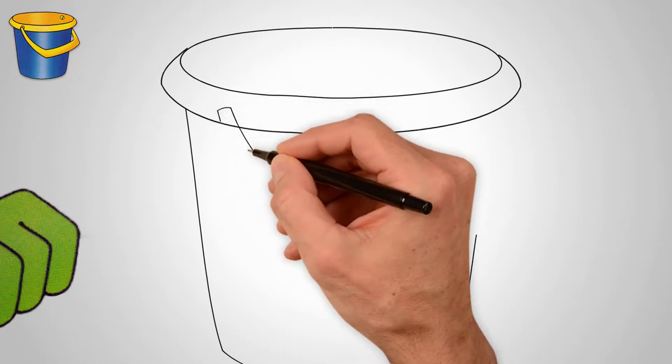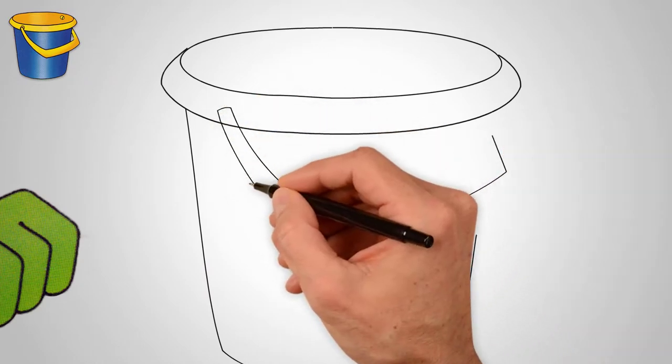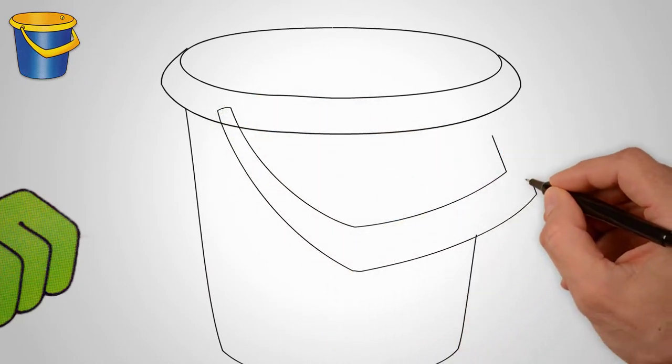Our bucket has a handle. Draw the bucket handle. We draw two fastenings of the handle.